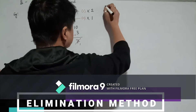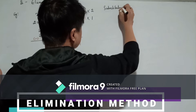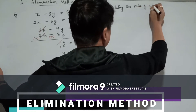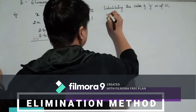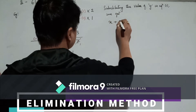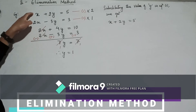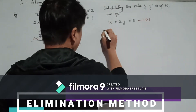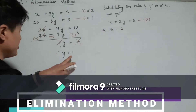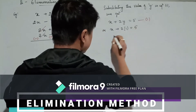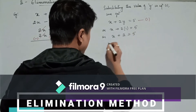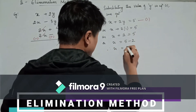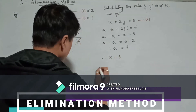Now, substituting the value of y in equation 1, we get equation 1: x plus 2y equals 5. Substituting y equals 1: x plus 2 times 1 equals 5, so x plus 2 equals 5. Taking 2 to the other side: x equals 5 minus 2. Therefore, x equals 3. So x equals 3 and y equals 1.